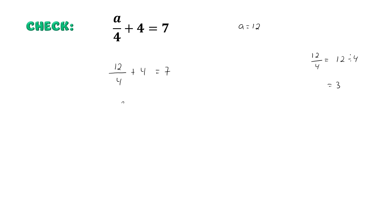So 3 plus 4 is equal to 7. Remember that when both sides of the equation equal the exact same number, that means the solution we got, which is A equal to 12, is the correct answer for our equation.